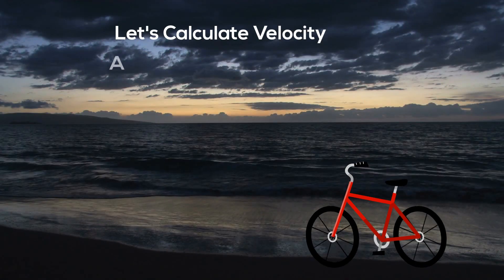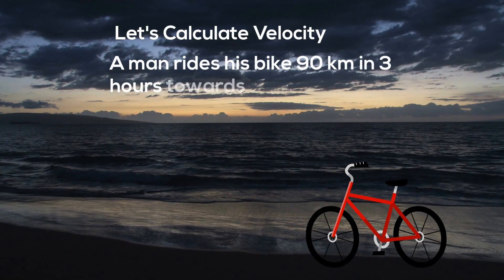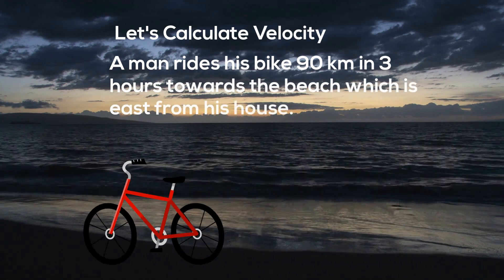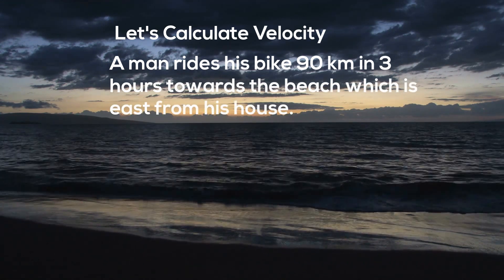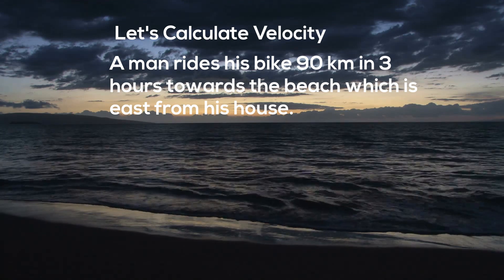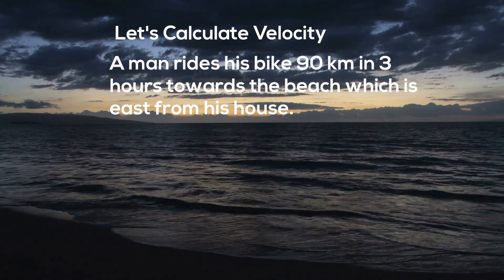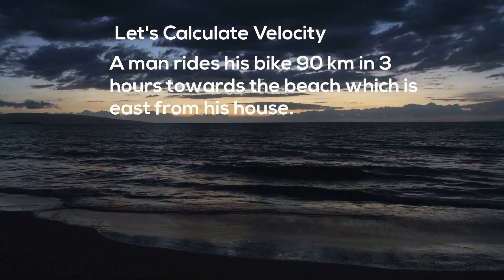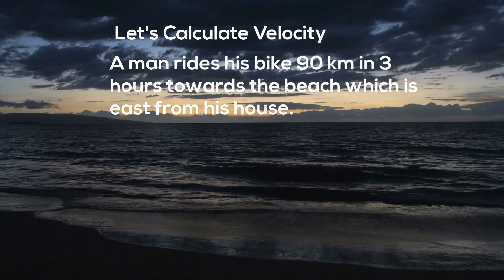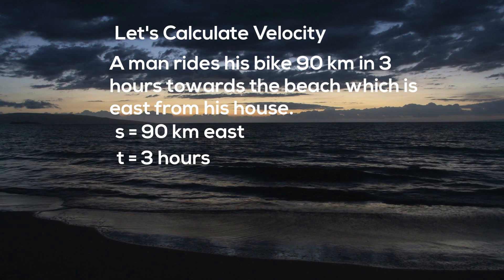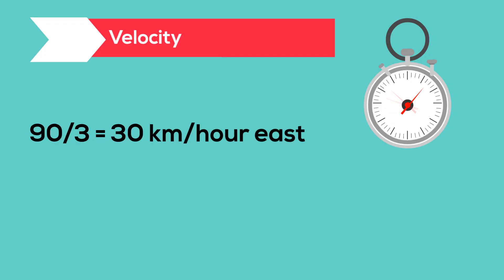A man rides his bike 90 kilometers in 3 hours towards the beach, which is east from his house. Calculate the average velocity. The velocity equals the distance and direction, and equals 90 kilometers east, and the time equals 3 hours. Divide these, and the velocity equals 30 kilometers per hour east.